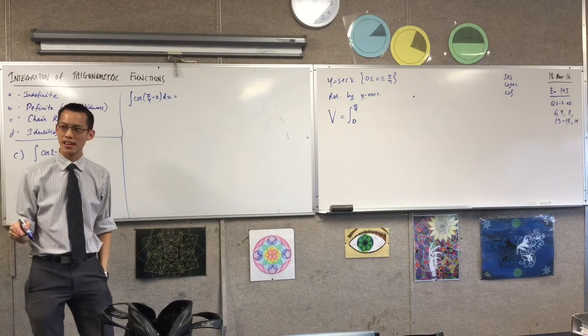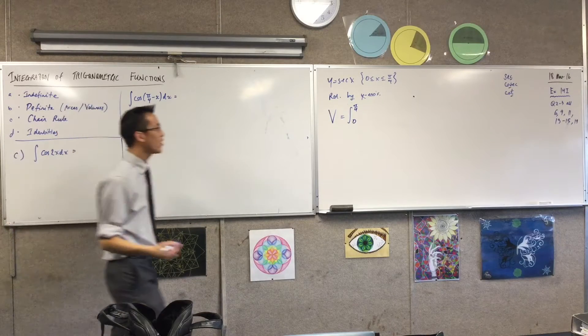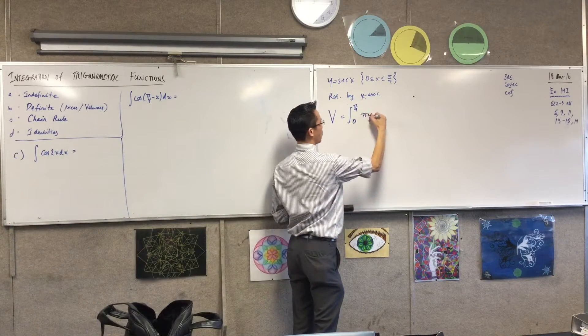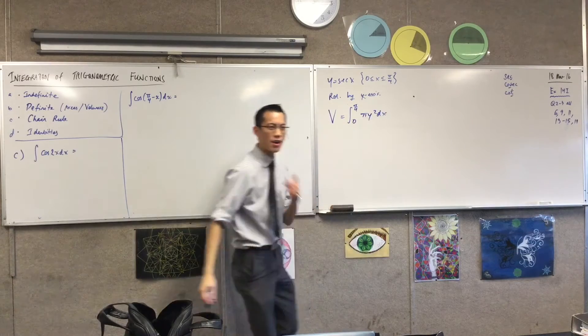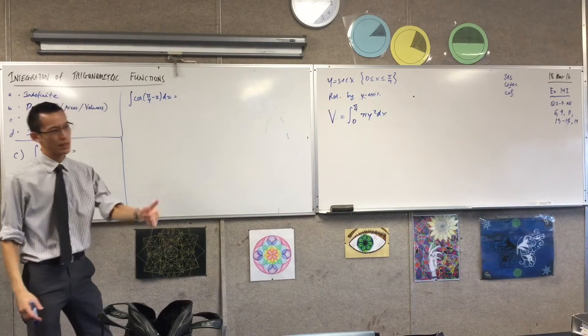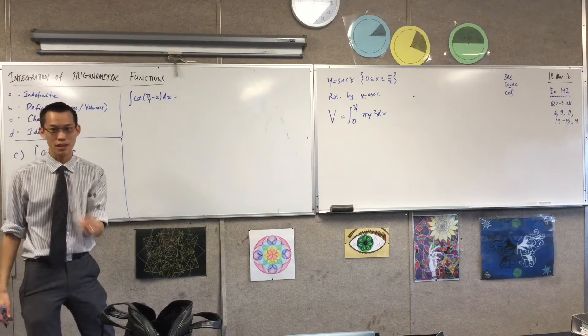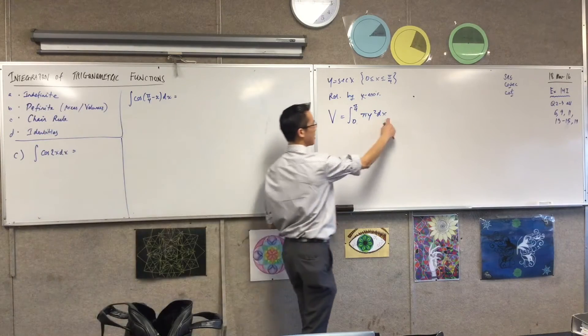Now, what I'm after here is I'm going to go ahead and write pi y squared dx, right? I know some people like to put that pi out the front. I am going to do that in a second. But I like keeping this here, because what is this? What does this represent?